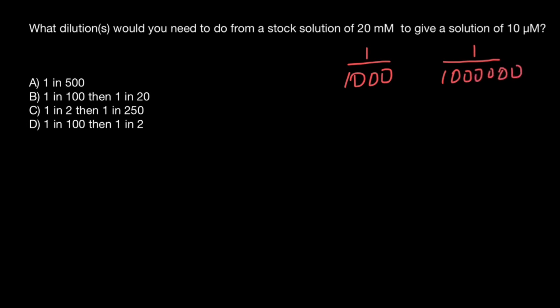As you see, one millionth is 1,000 times smaller than one thousandth. And 10 is twice smaller than 20. So here we need a 2,000-fold dilution. 20 mM is 2,000 times more concentrated than 10 μM.